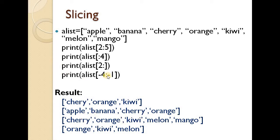Next, print a[-4:-1] — using negative indexing in reverse order. Minus four is 'orange', minus three is 'kiwi', minus two is 'melon', minus one is the last element. So the result is orange, kiwi, melon.